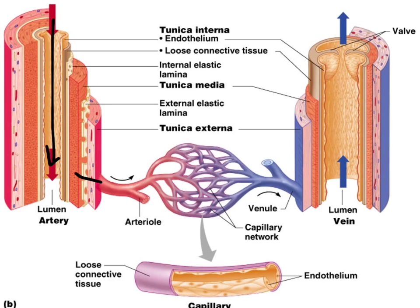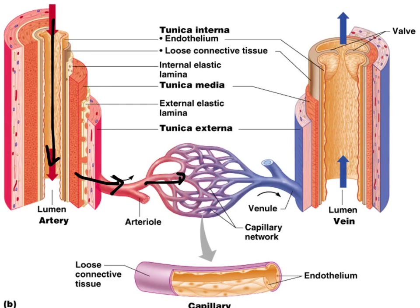By the time blood gets into the arterioles and into the capillary, the capillary only has one layer — the endothelium, which is the tunica interna — plus a loose connective tissue covering. It is not very strong and breaks easily. The only purpose of the capillary is gas exchange, which is why it is thin. From the capillaries, blood travels through the venules and then through the veins to get back to the heart. Blood moves through the veins by the skeletal muscles surrounding the blood vessel.